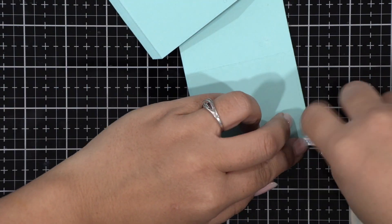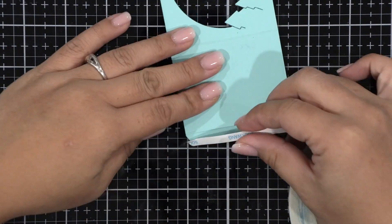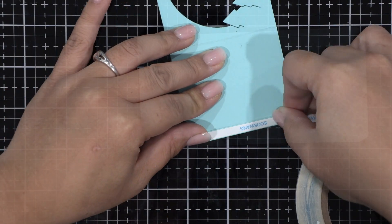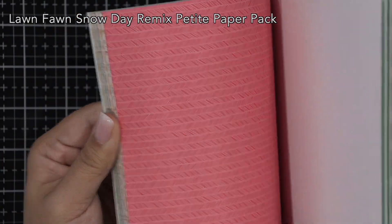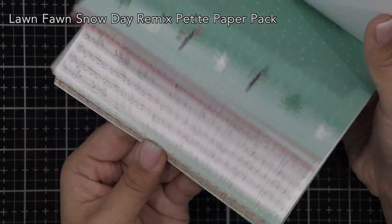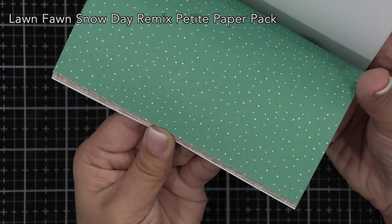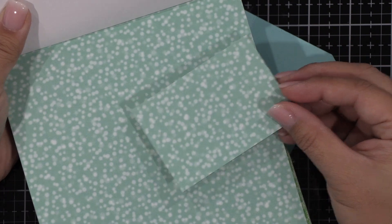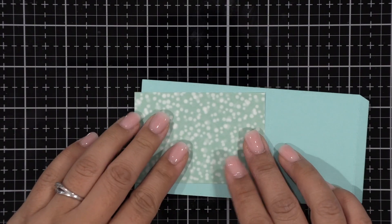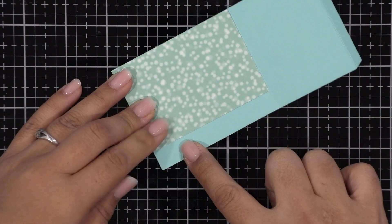I'm going to add double-sided adhesive to those flaps to construct the box later. I've got the Snow Day Remix Petite Paper Pack here that I love. I love this one, especially with the bunnies, but we're going to flip towards the one with the bouquet effect snowflakes. That's going to coordinate well with my mermaid cardstock.